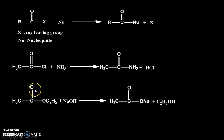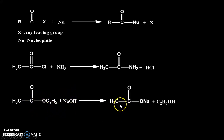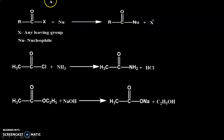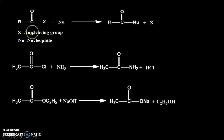One more example: suppose we take an ester, R-C(=O)-OC2H5, and we take NaOH. Here NaOH acts as a nucleophile — the oxygen will attack on this carbon, and OC2H5 will be removed as a leaving group. So the product we get is R-C(=O)-ONa plus C2H5OH. So whichever acyl compound you take, if we do nucleophilic attack on it, we get the nucleophilic substitution product. This reaction is called acyl nucleophilic substitution.